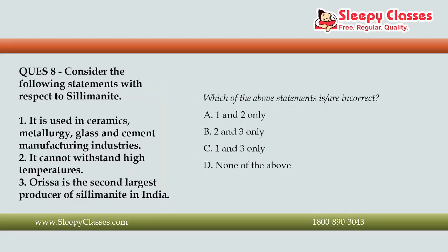The next question asks you to consider the following statements with respect to sillimanite. First, it is used in ceramics, metallurgy, glass, and cement manufacturing industries. Second, it cannot withstand high temperatures. Third, Odisha is the second largest producer of sillimanite in India. Which statements are incorrect? The correct answer is Option B, 2 and 3 only — statements 2 and 3 are incorrect, and statement 1 is correct.